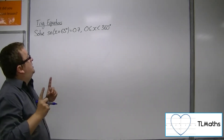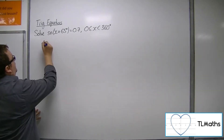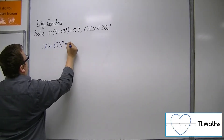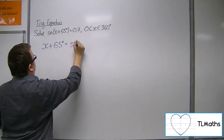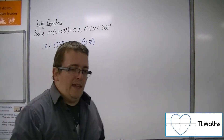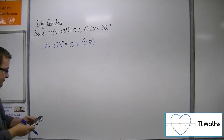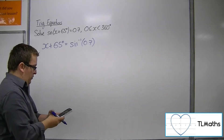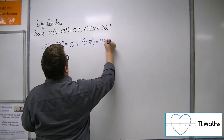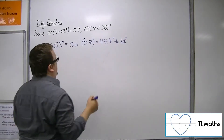The first thing to do with these types of problems is to inverse sine both sides. So we need to get the inverse sine of 0.7. Inverse sine of 0.7 is 44.4 degrees to 3 significant figures.